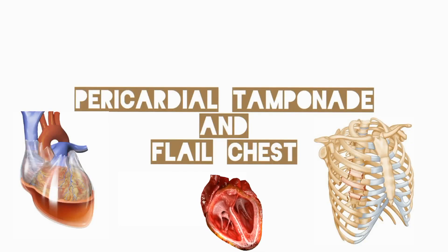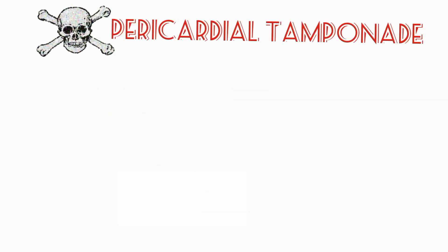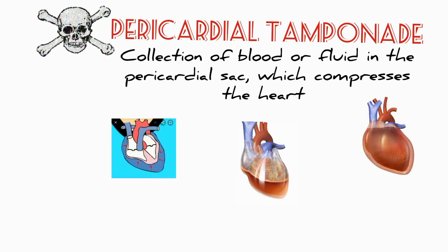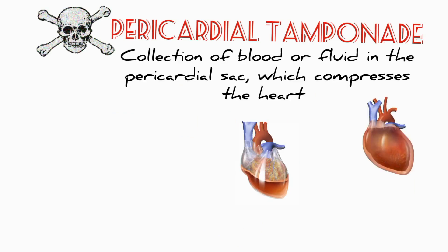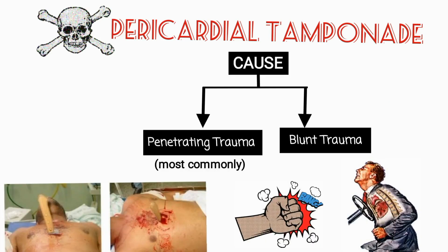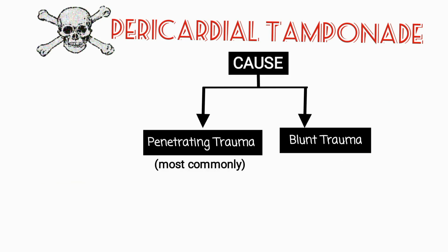Asalaamu alaikum. In this video we are going to discuss pericardial tamponade and flail chest. Starting with pericardial tamponade, it is a collection of blood or fluid in the pericardial sac, and this fluid compresses the heart. It is most commonly caused by penetrating trauma, but blunt trauma can also cause this condition.